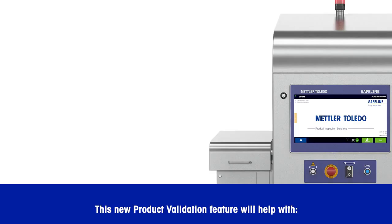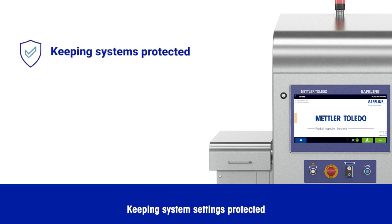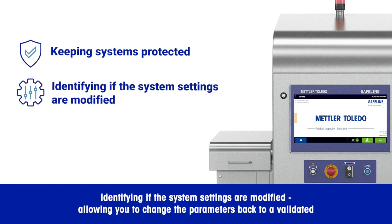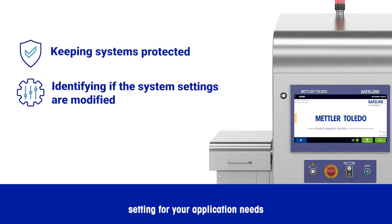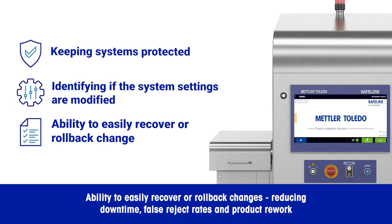This new product validation feature will help with keeping system settings protected. This is a common concern, with several instances where system settings have been modified to address high reject rates. It identifies if the system settings are modified, allowing you to change the parameters back to a validated setting for your application needs, with the ability to easily recover or rollback changes, reducing downtime, false reject rates, and product rework.